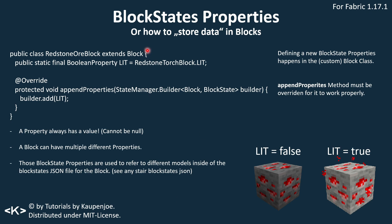I've put a subtitle here: 'how to store data in blocks,' more or less. Let's take a look at the RedstoneOreBlock once again. The idea is to have a public static final BooleanProperty called 'lit', set to RedstoneOreTorchBlock.LIT. You can also create your own custom block state properties. This always happens in your block class, at the top of your custom block classes.